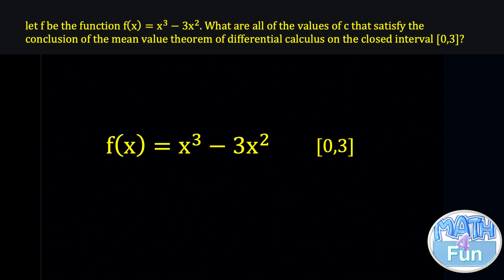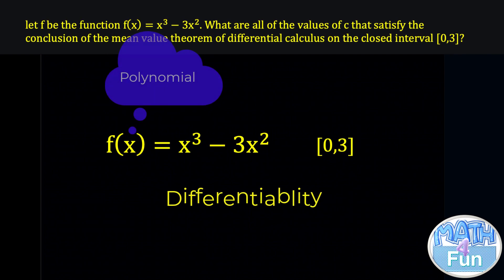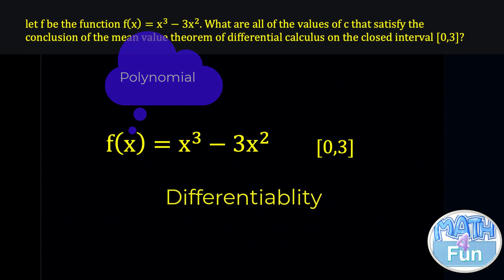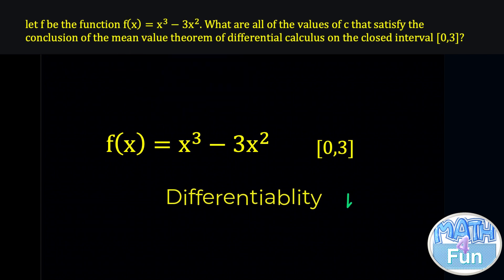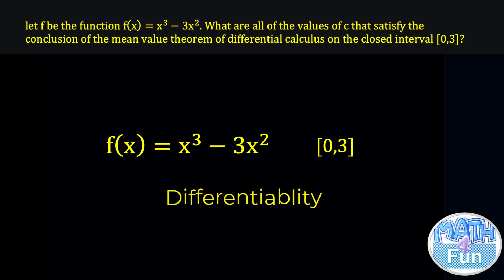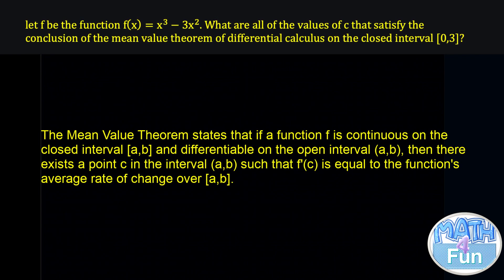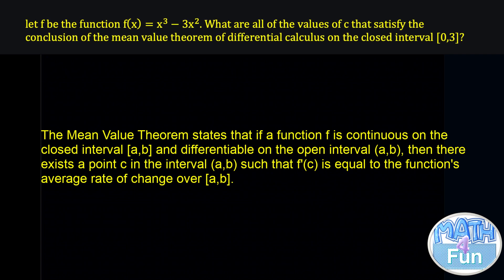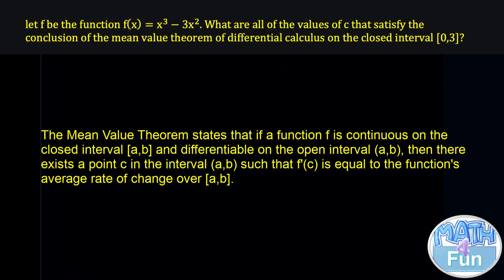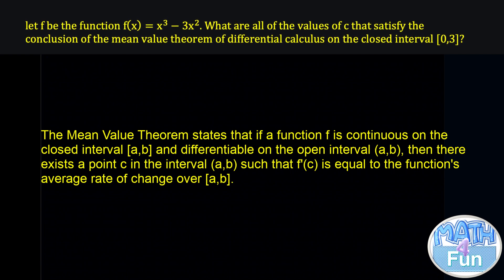The second condition is differentiability on the interval 0 to 3. The function f of x is a polynomial, and all polynomials are differentiable everywhere. Therefore f of x is differentiable on 0 to 3. Since f of x satisfies the conditions of the mean value theorem on the interval 0 to 3, we can apply the theorem. The mean value theorem states that if a function is continuous on a closed interval from a to b and differentiable on an open interval from a to b, then there exists a point c in the open interval such that f prime of c equals f of b minus f of a over b minus a.